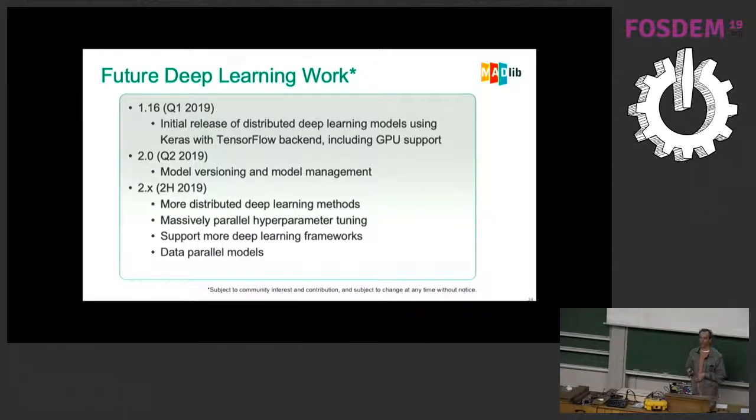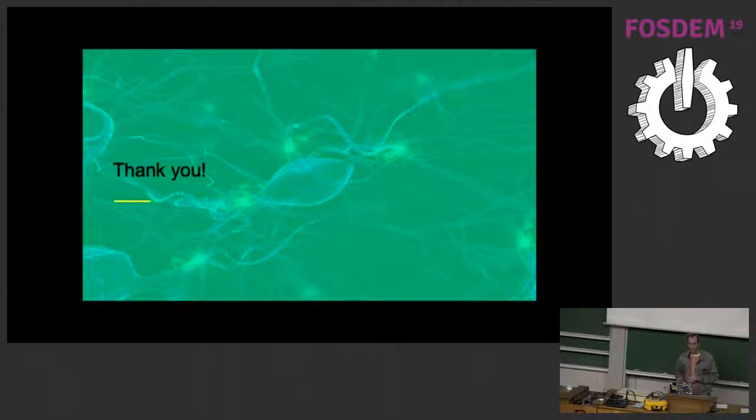I'll talk about the future work that we're planning to do. Apache Madlib has a release coming up probably within the next month, which is the initial release of the distributed deep learning. We're currently going to support Keras with the TensorFlow backend with GPU support. The work that we have planned for the remainder of this year is very deep learning focused. We want to look at more distributed deep learning methods, we want to implement the parallel hyperparameter tuning that I mentioned before, and we're also in the process of adding a model versioning repository. That will allow you to run tons and tons of models in parallel, collect your results in one table, and then sort through them to pick your best parameters.